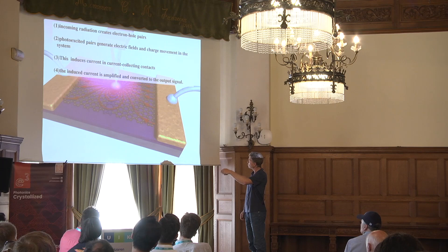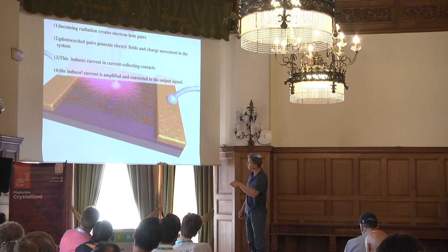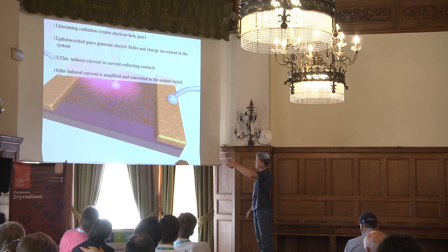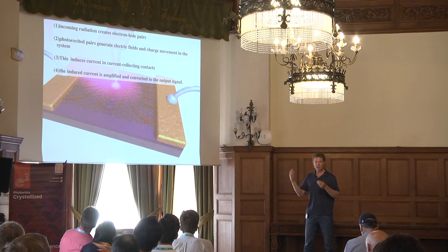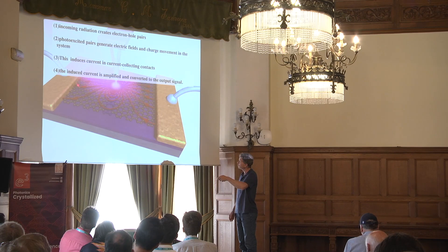Some of these currents actually make it all the way to the metallic contacts. When I measure the current with my current meter from one contact to another, I will actually measure this. Locally, something happens at a scale of 10 to 20 nanometers, but these contacts can really be far away — microns or even millimeters — and I can still measure this effect. Some of these current field lines will always make it into the contacts.